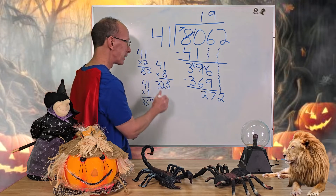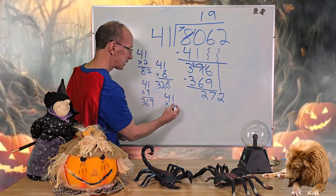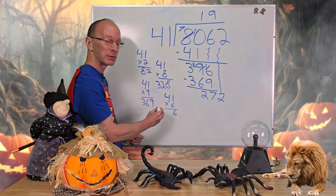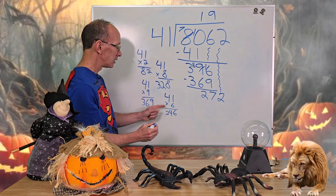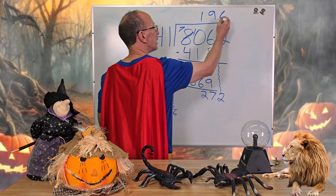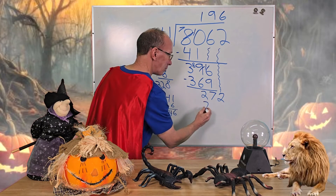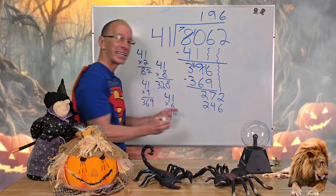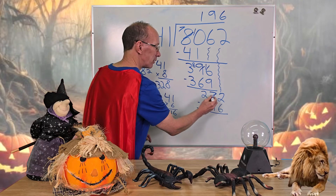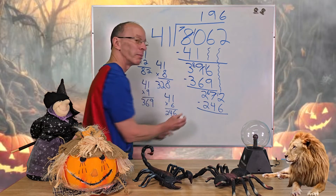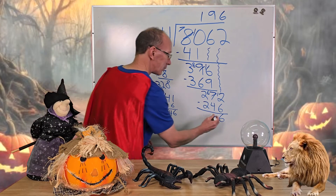8 was too big, so let's drop that down. Let's try 41 times 6. So 6 times 1 is 6, 6 times 4 is 24 — I think that's the one to use. I'm going to put 6 right here, and 6 times 41 is 246. I'll put 246 right here. Again, we're going to be subtracting. I need to borrow — so 7 will be a 6, this turns into 12. 12 minus 6 equals 6, and then 6 minus 4 equals 2.